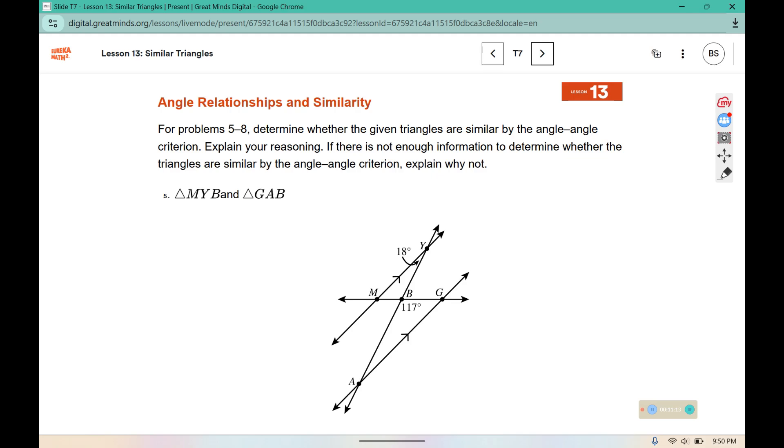For problems 5 through 8, determine whether the given triangles are similar by AA criterion and explain your reasoning. If there is not enough information to determine whether the triangles are similar by AA criterion explain why not.